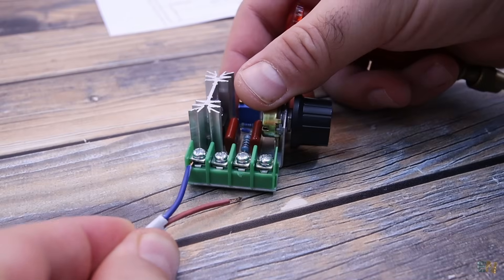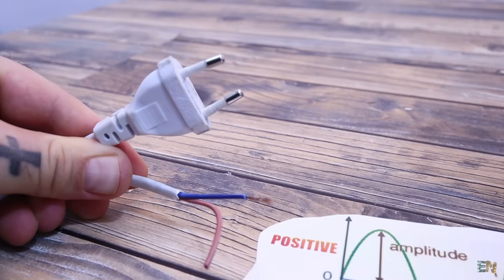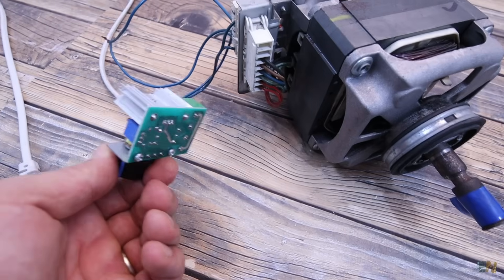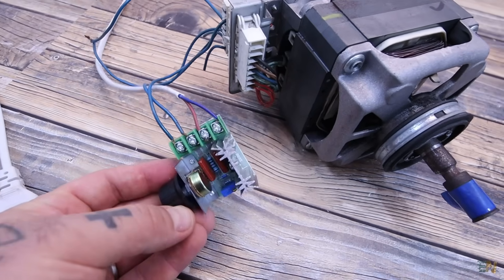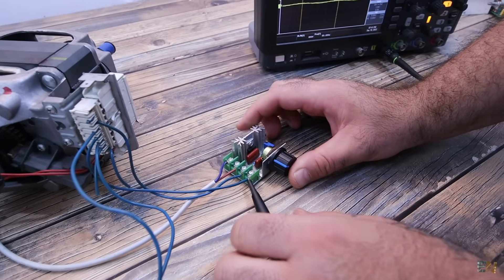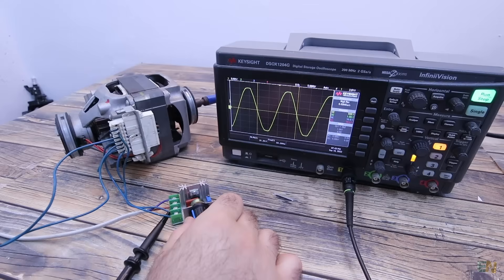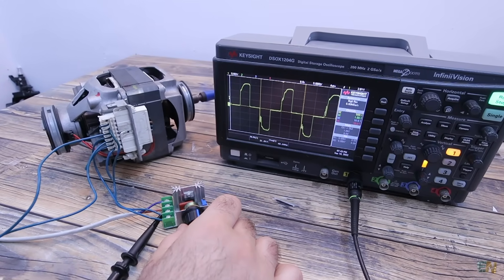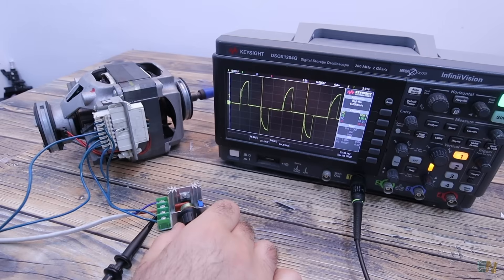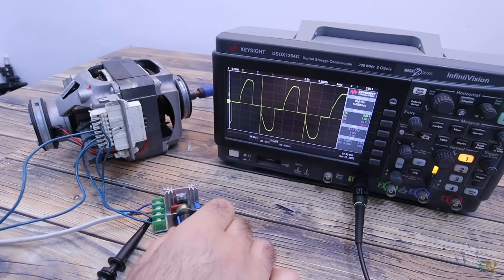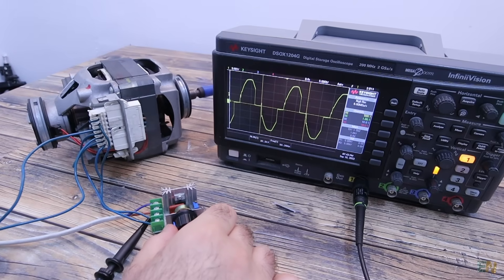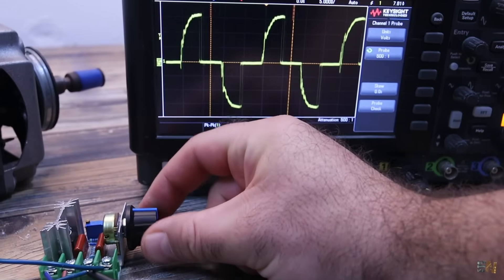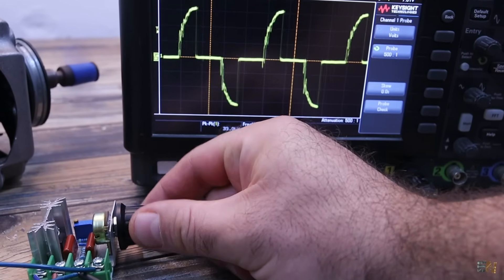I connect it to 220V from the main outlet and the output is connected to my AC motor. I also connect the output to the oscilloscope to see the results. I power on the circuit and start moving the potentiometer. As you can see, the more I rotate the potentiometer, the bigger or smaller the AC part of the wave gets, so more or less power is applied to the motor.